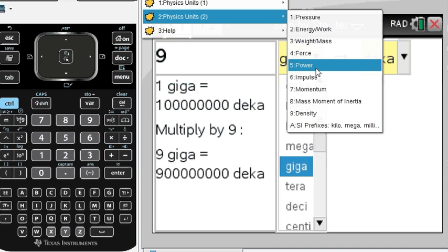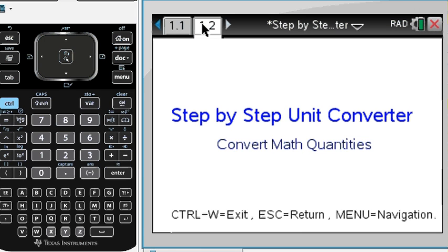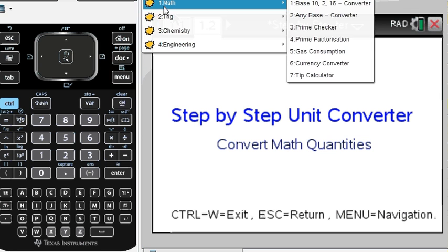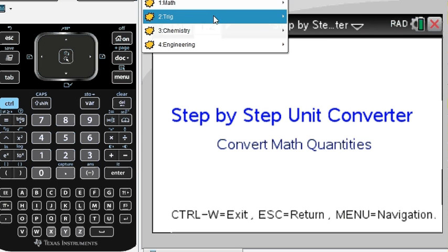Remember: force, power, impulse, all of that you can see, easy to convert. Then in the other section, into the different tab 1.2, we are converting math units, trigonometry, chemistry and engineering.